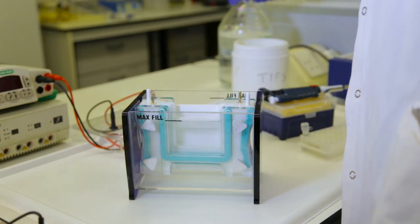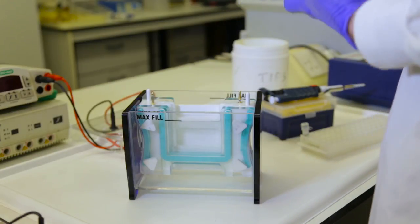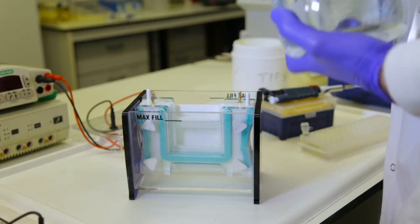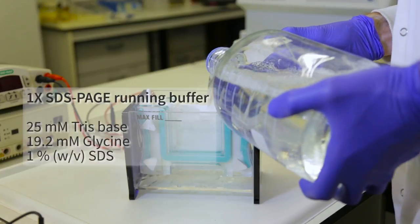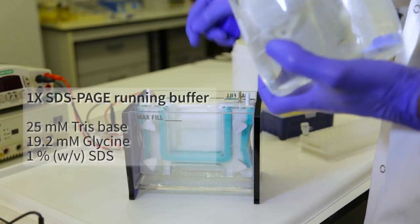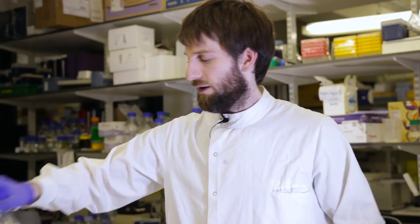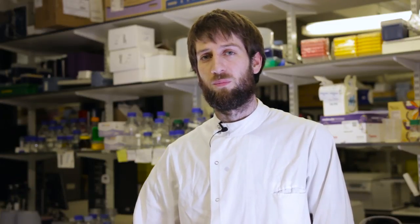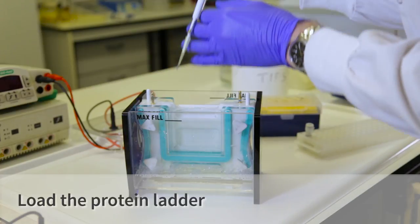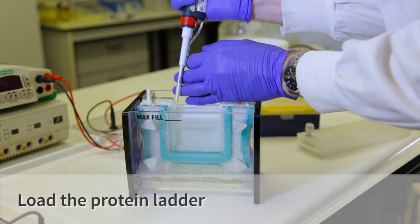To make the SDS gel tank unit, we add running buffer to the tank. This allows the current to move from the inside of the cassette through the gel down to the outside. Now the first thing we're going to load onto the gel is the protein ladder. This contains a pre-prepared mixture of proteins of specific sizes to allow us to check what size our protein is running at.